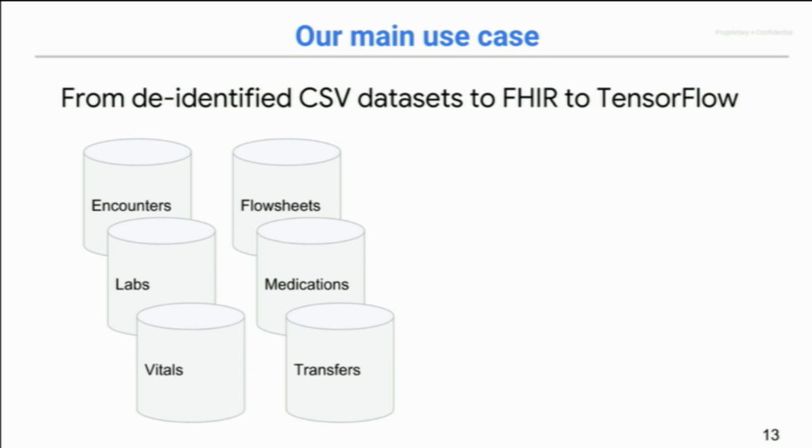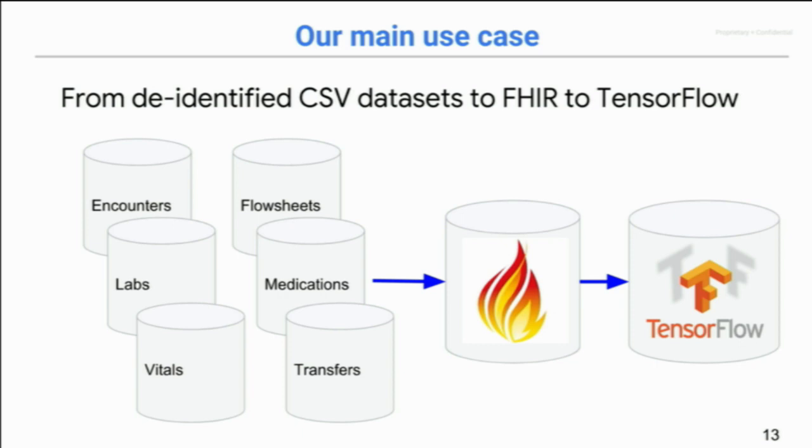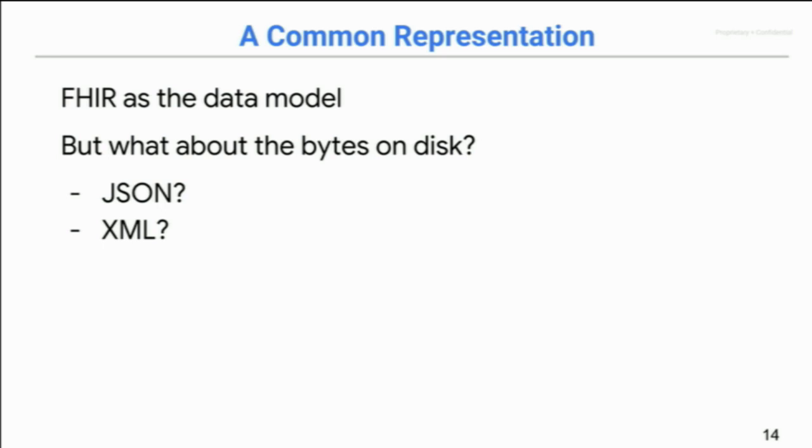We decided pretty early on to use FHIR for the representation to normalize the data. But there's more to it than that. You start out with a bunch of different resources. You put it into FHIR. And then from FHIR, we go to TensorFlow. So this is basically the model that we're following. But there's more to it. If you have a data model, that's great. But how are you going to deal with the bytes? So FHIR defines a way of serializing to JSON, to XML. I feel like more people use the JSON representation these days than XML. They are, in theory, both options that are well understood and documented. But maybe not as suitable for large data.